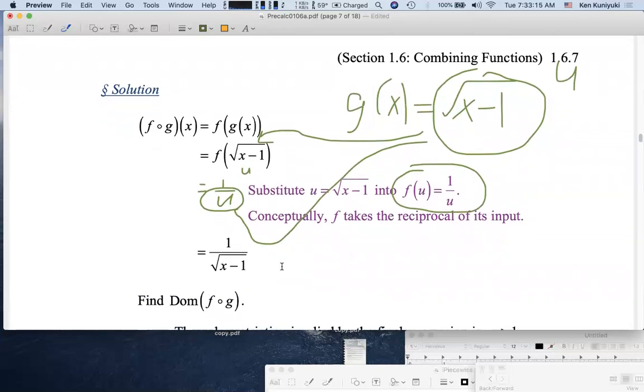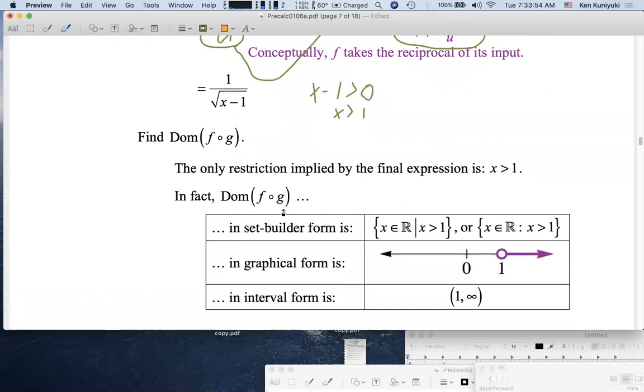Now I'm not going to push you too hard on the domain issue in the context of composite functions, but this would have been legal on exams. If I were to say h(x) equals 1 over root x minus 1, then we could treat this as a straight domain problem. When does this yield real results? If and only if x minus 1 is positive, that is when x is greater than 1. And it does turn out that's the only restriction on the domain, even in the composite setting. There are no other hidden restrictions. So here's the domain of f circle g in set builder form, graphical form, and interval form.